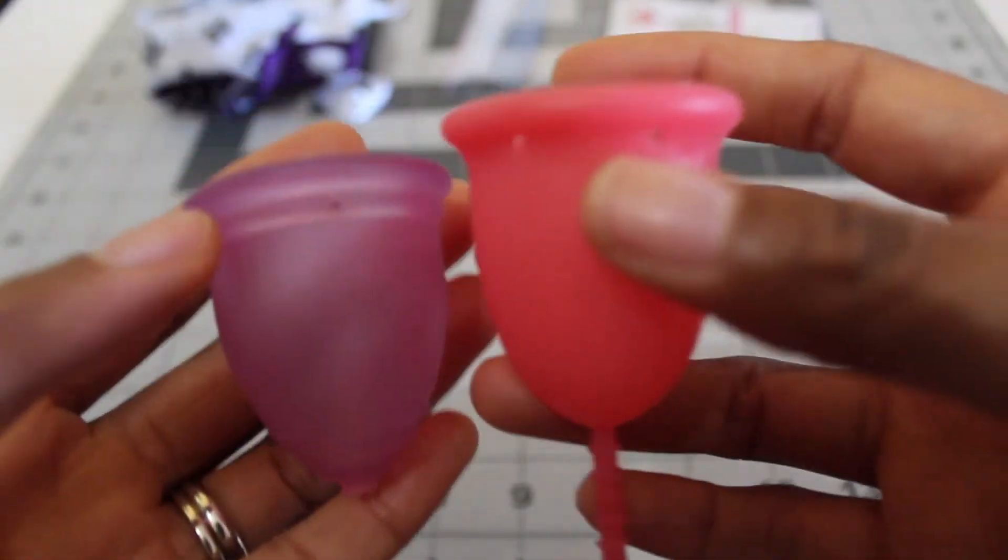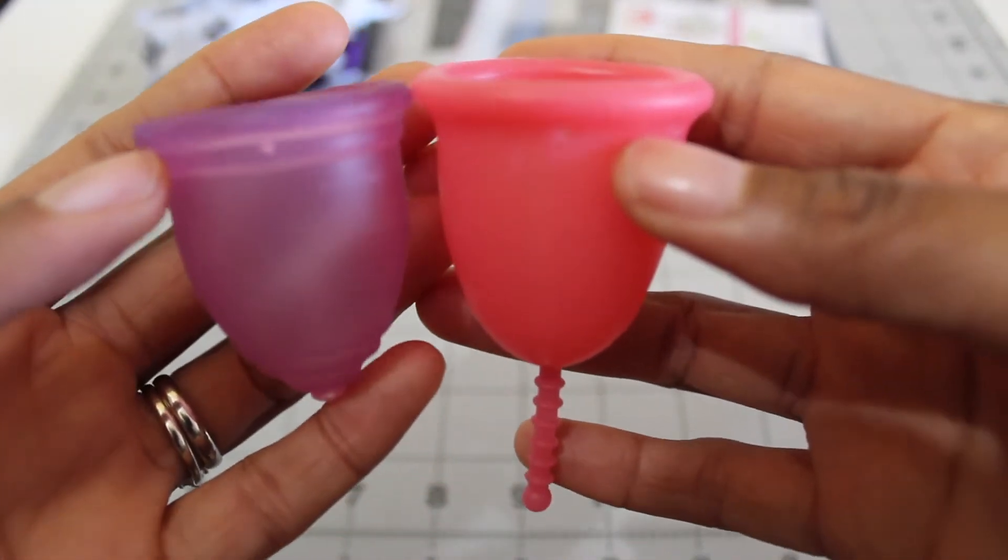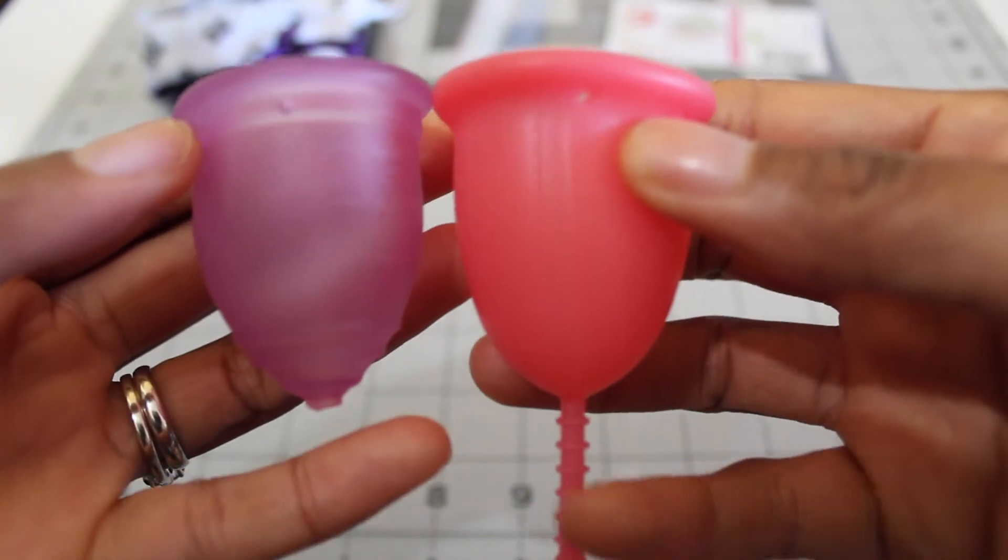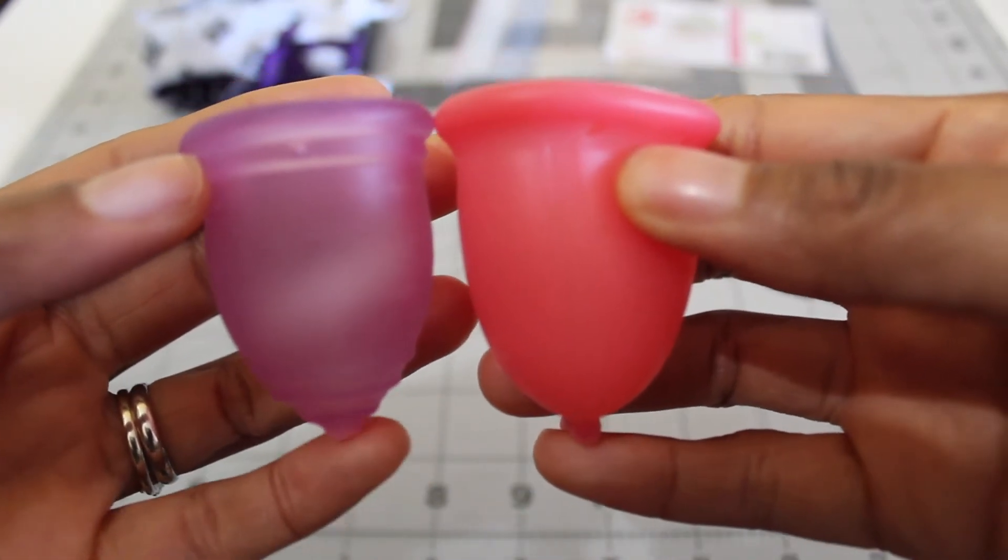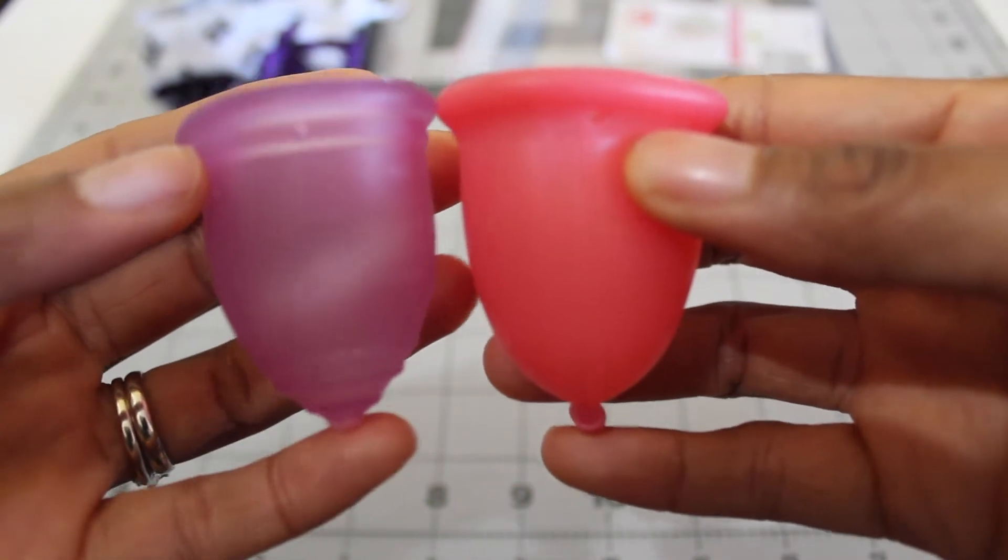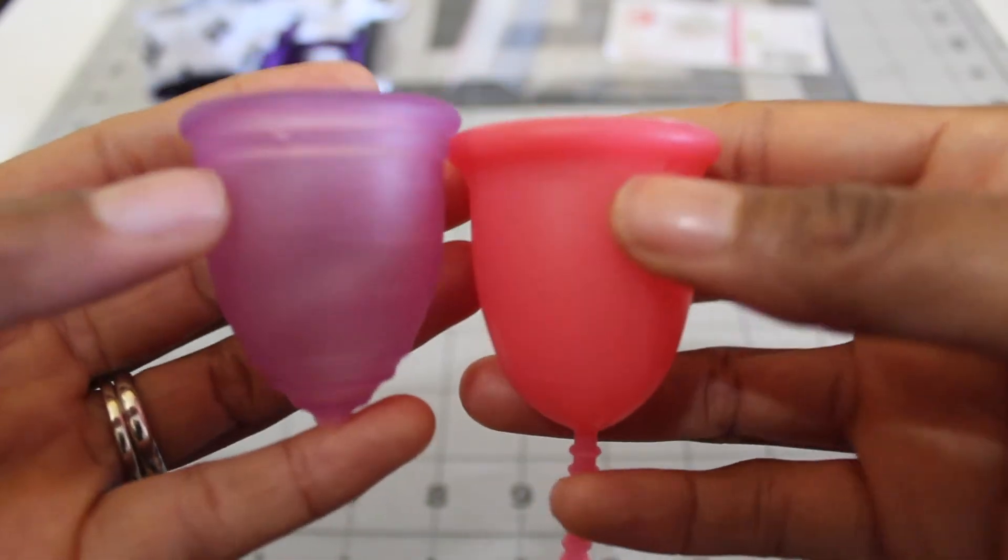So looking at the cup side by side. I would say the bodies are about the same length. The Ruby might be like a little bit longer but this is a little extra notch that was left here after I trimmed the stem. Generally the same.